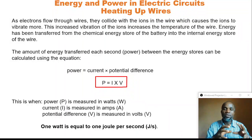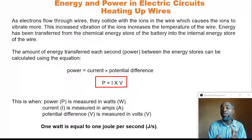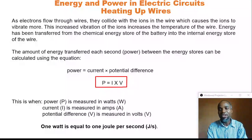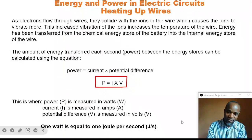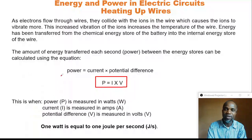As electrons flow through wires, they collide with the ions in the wire, which causes the ions to vibrate more. This increase in vibration of the ions increases the temperature of the wires. We must take note of that.